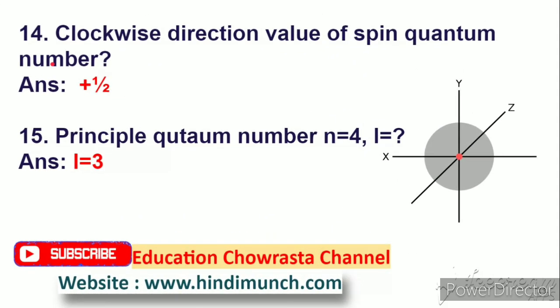Next question: clockwise direction value of spin quantum number. Spin quantum number kii clockwise direction lo value entha? Answer: plus 1/2.